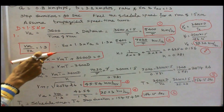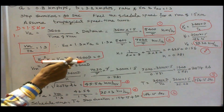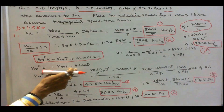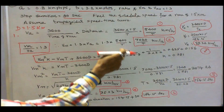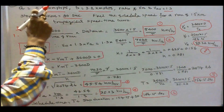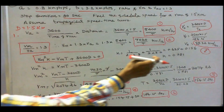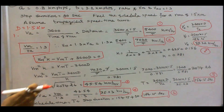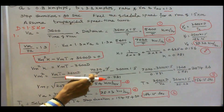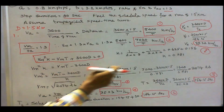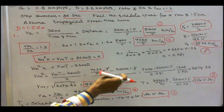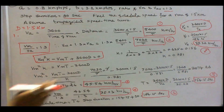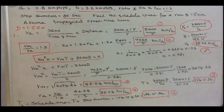Using the relation vm squared times k minus vm times T plus 3600d equals zero, we get vm squared equals (vm times T minus 3600d) divided by k. With k equal to 1 over 2a plus 1 over 2b, where a equals 0.8 and b equals 3.2, k equals 0.781. Substituting vm equals 7020 over T and d equals 1.5 gives vm equals 45.54 km per hour.